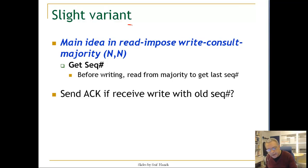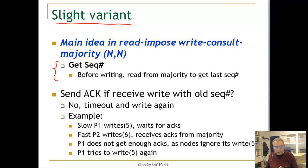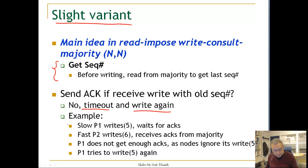There is a variant of this algorithm worth discussing to see if it is correct. It still has the phase of getting the sequence number, but nodes receiving write requests with an old sequence number simply ignore them. The node that requested the write then times out and tries to write again. For example: slow process P1 writes with sequence number 5 and waits; fast process P2 writes with sequence number 6 and receives acknowledgements from a majority.